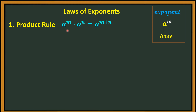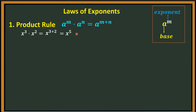In the product rule, a raised to m times a raised to n is equal to a raised to m plus n. As you can see, they have the same base — base is a, and the other one is also a. So they have the same base; you just copy and add the exponents. Let's have an example: x cubed times x squared, same base which is x, so you copy and add the exponents — that is x raised to the 5th power.